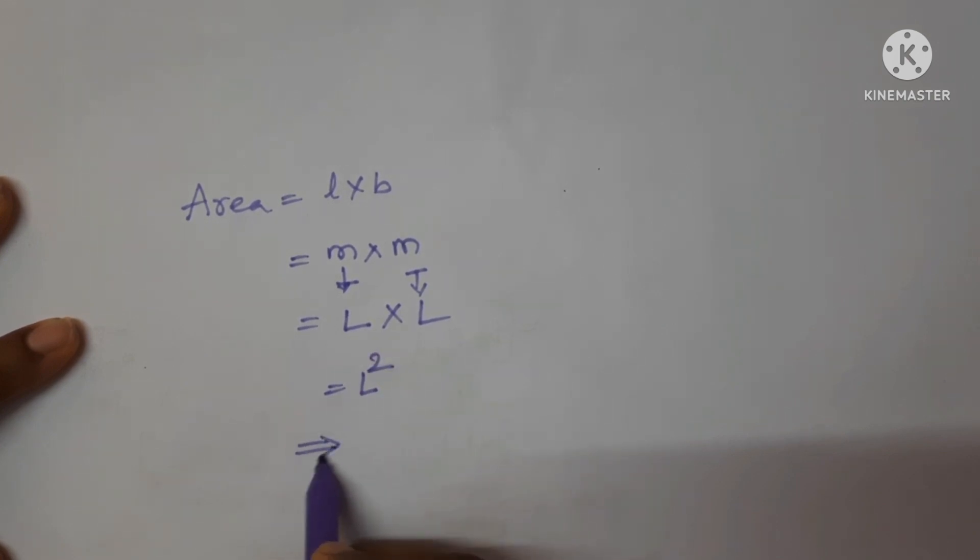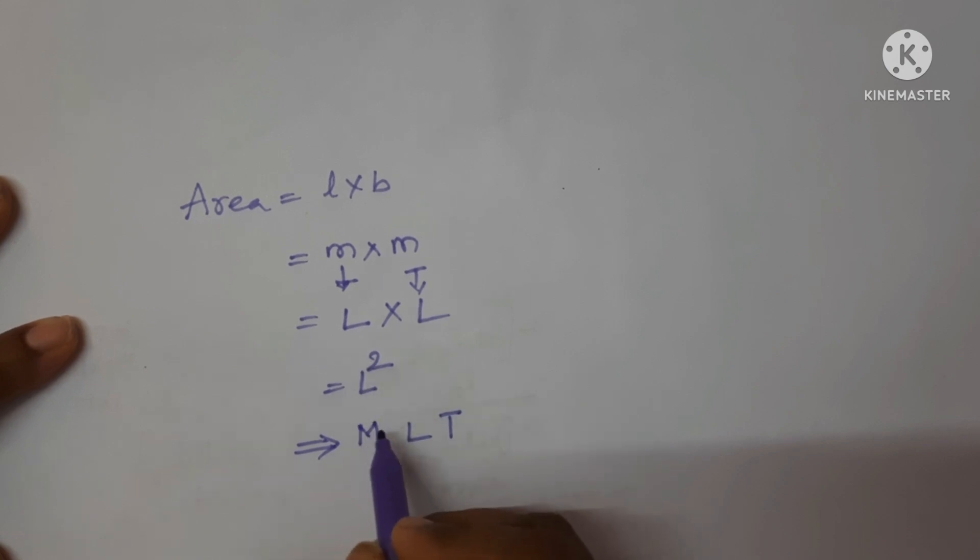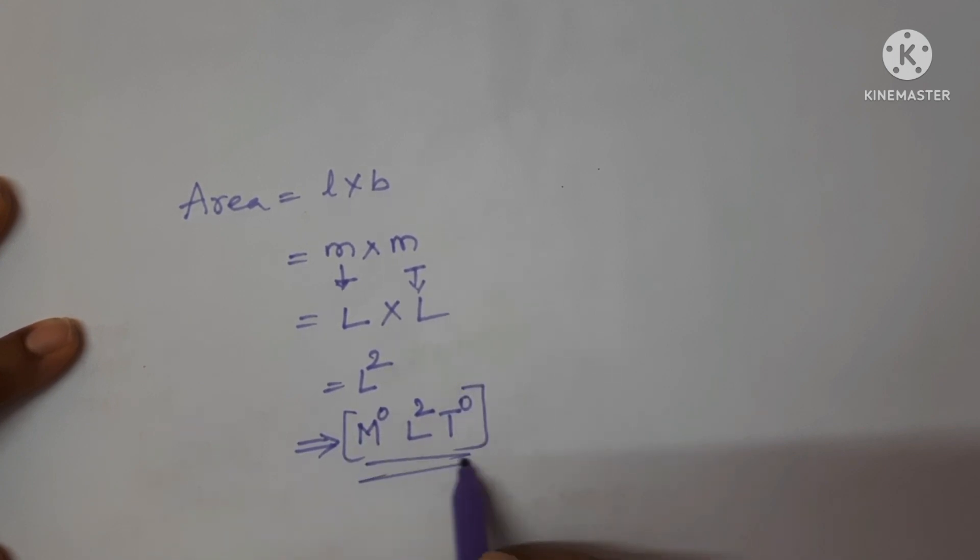Now, express the dimensional formula in terms of M, L and T. See, mass term is absent, so M power 0, length term is L square and time term is absent, so T power 0. This is the dimensional formula for area.